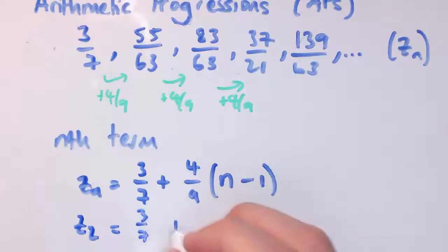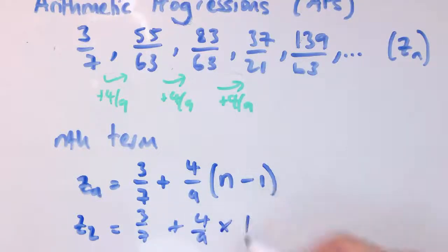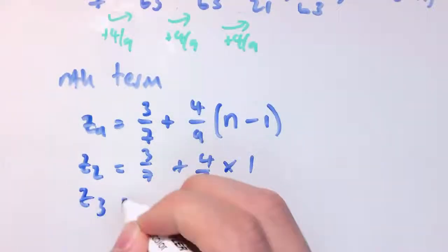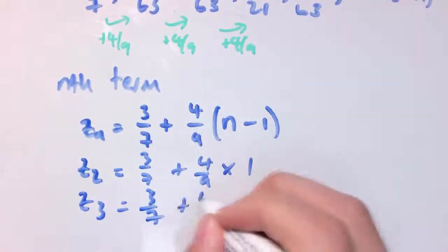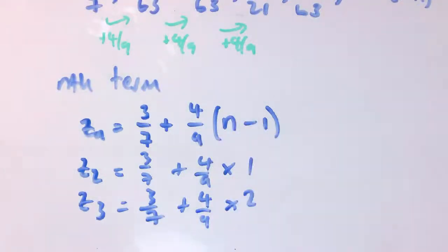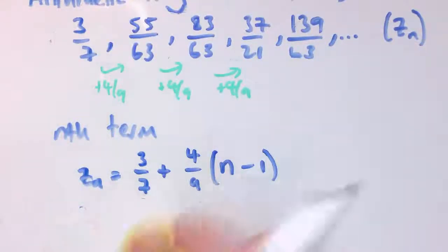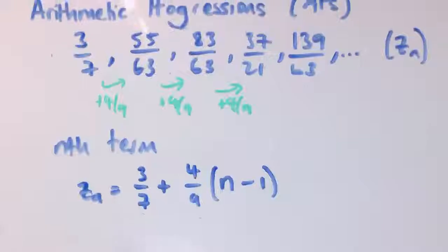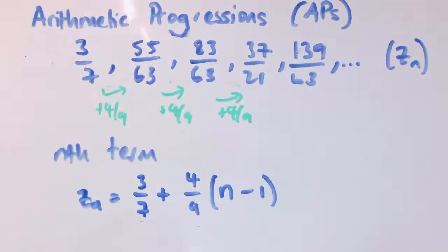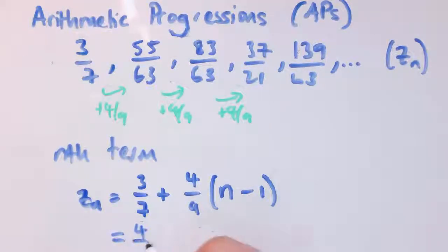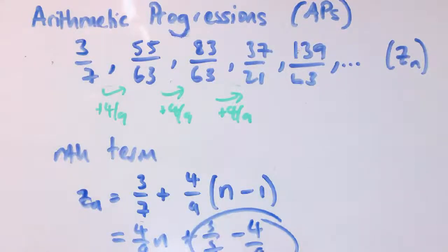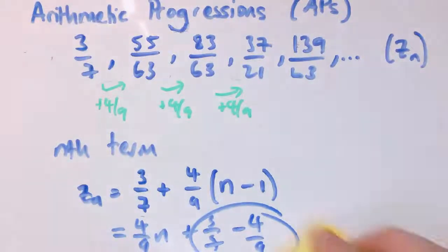For z_2, you get 3/7 plus 4/9 times (2 minus 1), which is 4/9 times 1 — so you've added on 4/9 once. For z_4, it would be adding it on 3 times, etc. If you multiply this out you'd get 4/9 n plus (3/7 minus 4/9), combining those into a single constant — that's the earlier form. But this way of writing it is pretty neat.